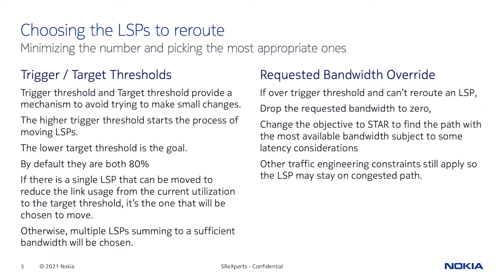By default, they are both at 80%, but you may want to examine adjusting them. If there is a single LSP that can be moved to reduce the link usage from the current utilization to the target threshold, it's the one that will be chosen to move. Otherwise, multiple LSPs summing to a sufficient bandwidth will be chosen.